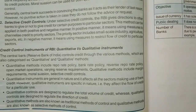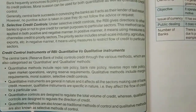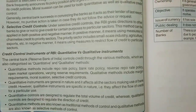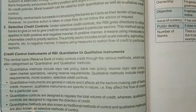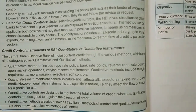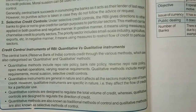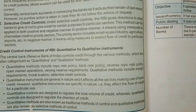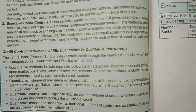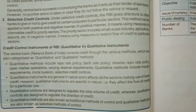Quantitative instruments are general in nature because they affect all sectors making use of bank credit. However, qualitative instruments are specific in nature — they can be used positively to give priority to certain sectors, and negatively to restrict the flow of credit to others. Quantitative controls are designed to regulate the volume of credit, whereas qualitative controls are designed to regulate the direction of credit. Quantitative methods are traditional methods, whereas qualitative methods are selective methods of control.